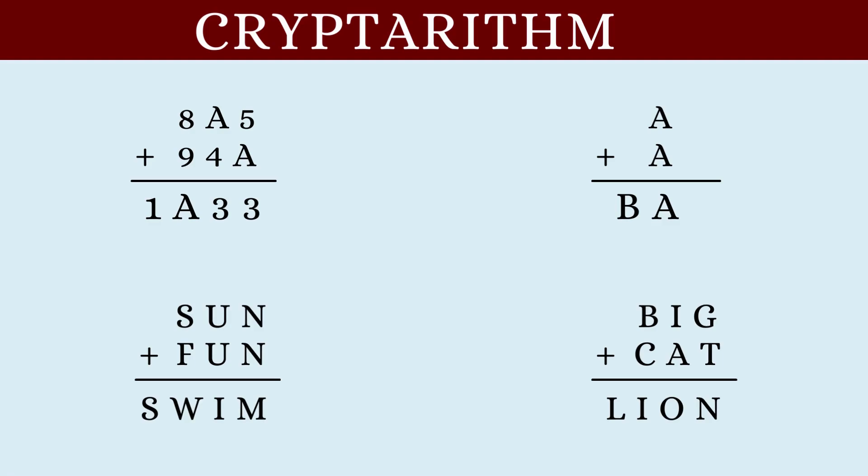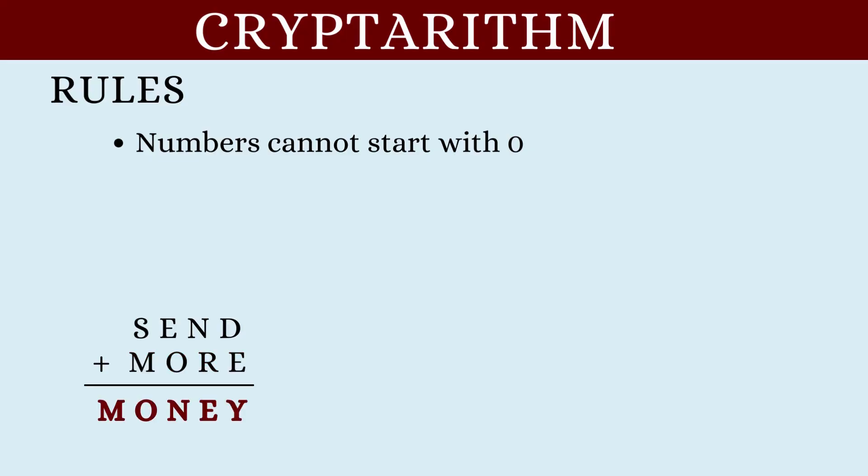Before we start solving, let's learn the rules that govern these cryptarithms. The first rule is that any number cannot start with a zero. Let's say we have this puzzle. Here, send is a number, more is another number and money will be another number. The first digits of these numbers cannot take the value of zero. So in our case, S and M will never be a zero.